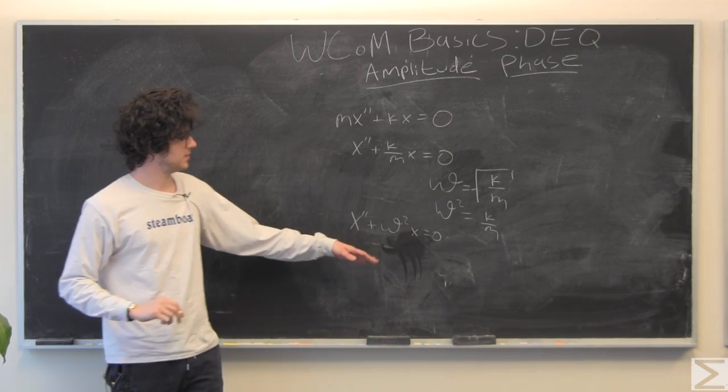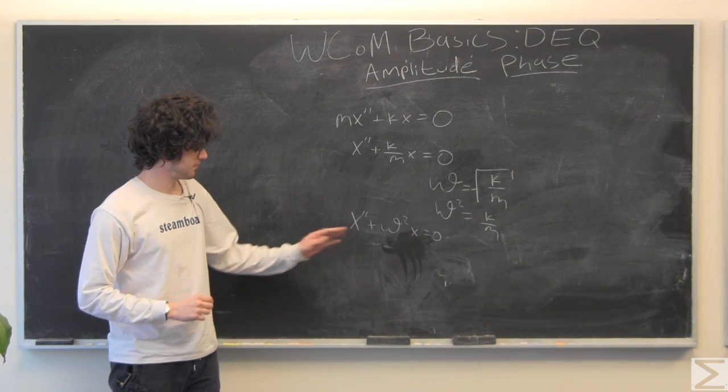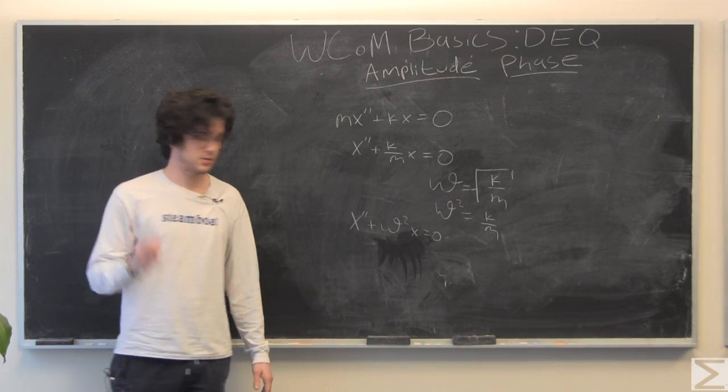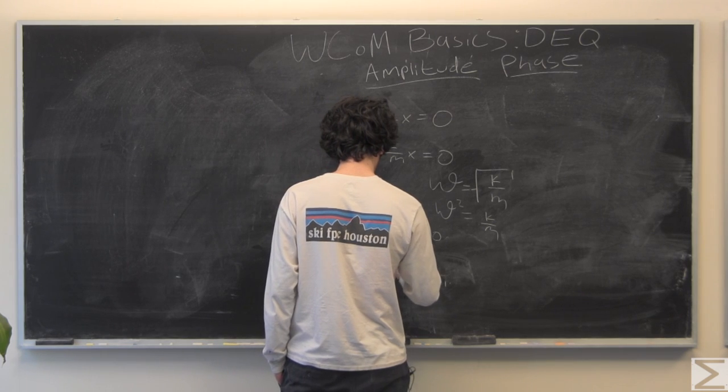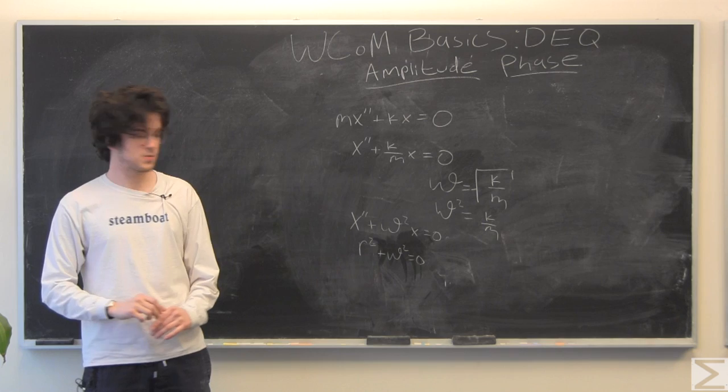For our purposes, you can just think of it as a way of condensing k over m. There's physical meaning to it, so finding our characteristic equation from this. It's going to be just r squared plus omega squared equal to zero.